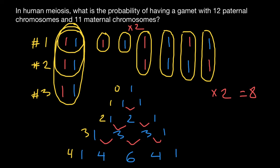Another key pattern: if we sum all numbers in each row, we get a clear pattern. Row zero sums to one; row one sums to two; row two sums to four; row three sums to eight. Each row's sum is twice the previous row's sum, so row four sums to 16 — we can predict this without adding. These row sums can also be expressed as powers of two: row zero is 2⁰=1, row one is 2¹=2, row two is 2²=4, row three is 2³=8, and row four is 2⁴=16.